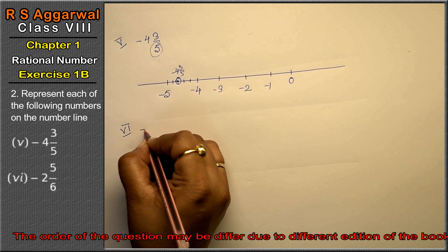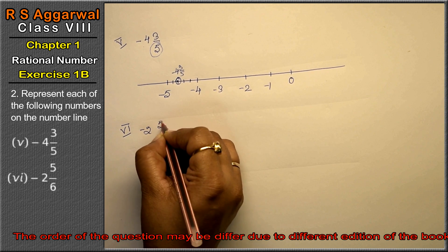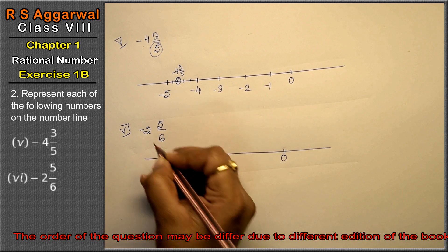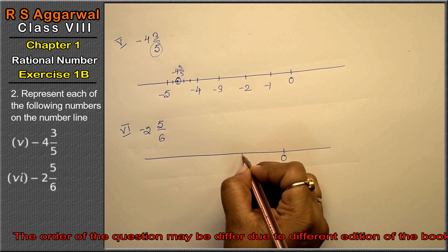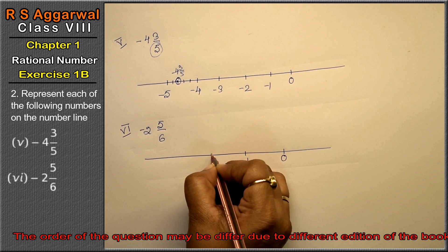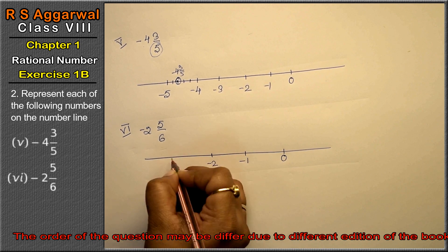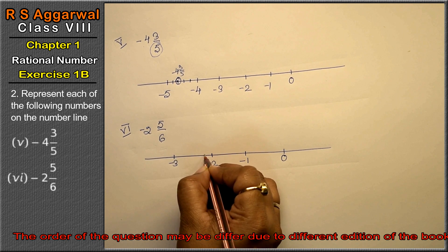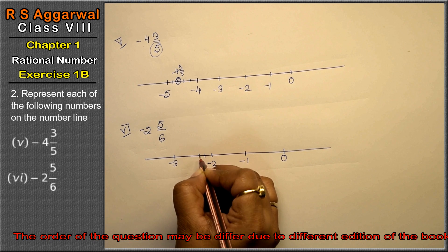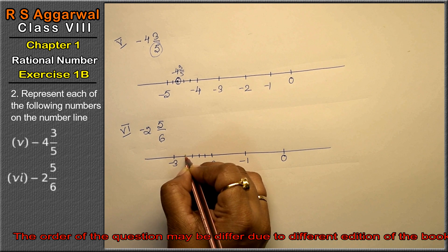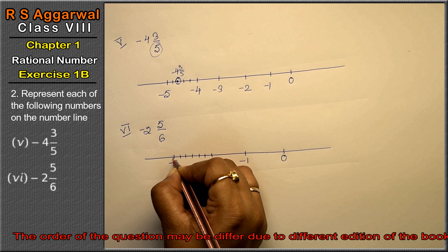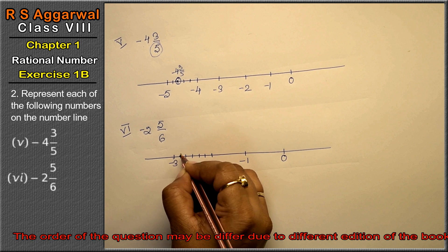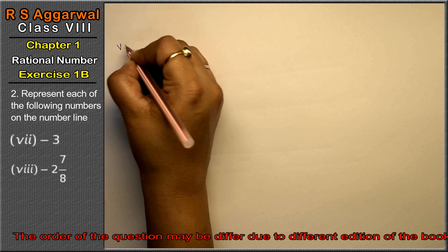Let's do 6th part. 6th part is minus 2 whole 5 upon 6. Simple - 0, minus 1, minus 2, minus 3. Jitna denominator hai utte parts karenge: 1, 2, 3, 4, 5, 6. 5th part pe number lagayenge. That is the answer.